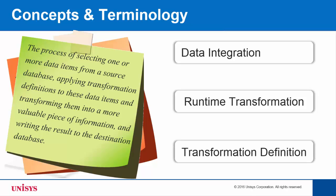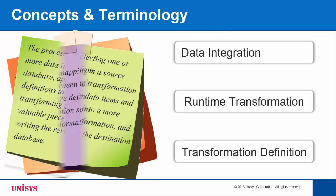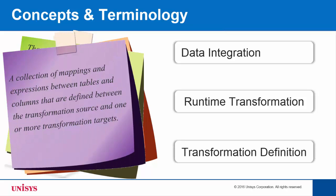Transformation definition is a collection of mappings and expressions between the tables and columns that are defined between the transformation source and one or more transformation targets.